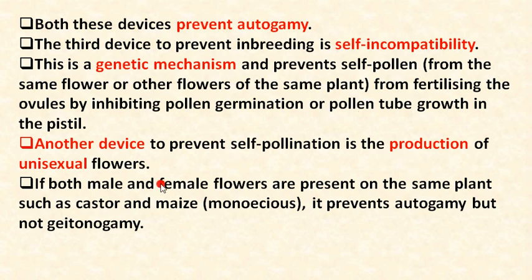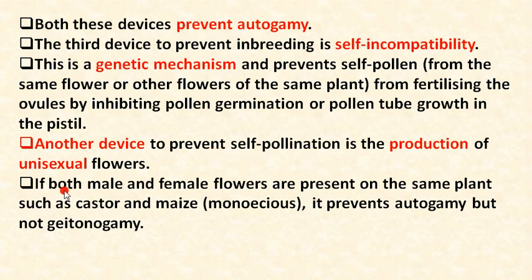Another device to prevent self-pollination is the production of unisexual flowers. Since only one type of gamete is present — either male or female — there is no chance of self-pollination. Only one of anther or stigma will be present in such a flower.